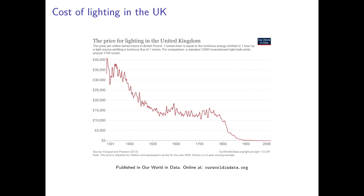One fascinating graph in this context is the price of lighting in the United Kingdom, showing the price of lighting in the UK from 1301 to 2006, where the price is per million lumen hours expressed in British pounds. Historically this price was very high at £35,000 — basically a time when the only source of lighting was fire. Then over time, with the advent of whale oil and so on, the price of lighting decreased quite strongly, followed by a sluggish period.